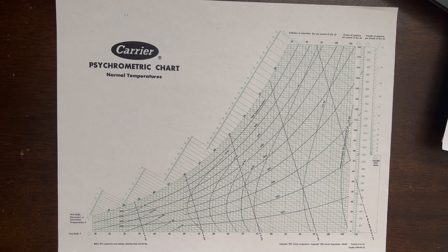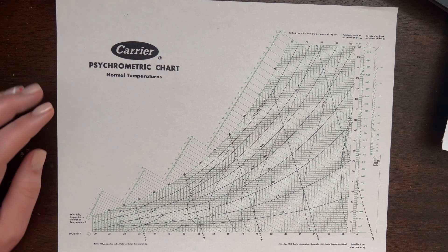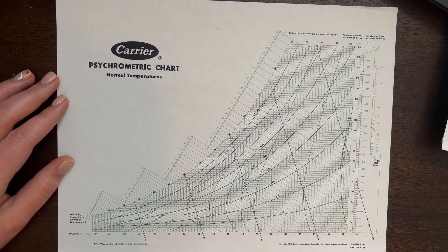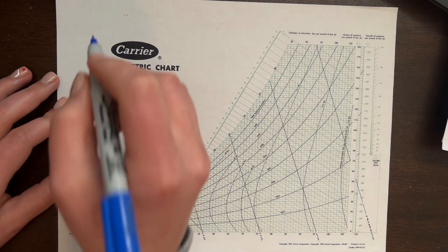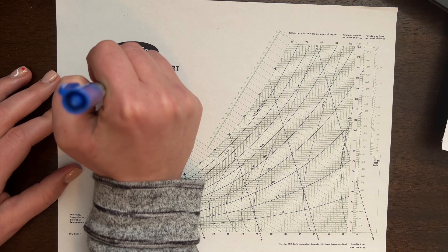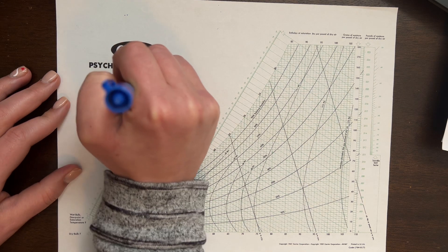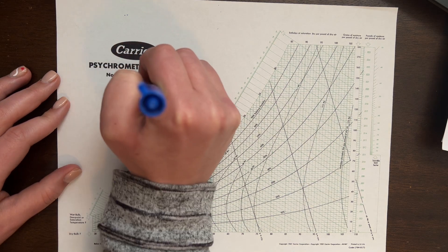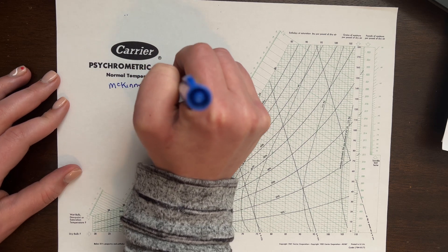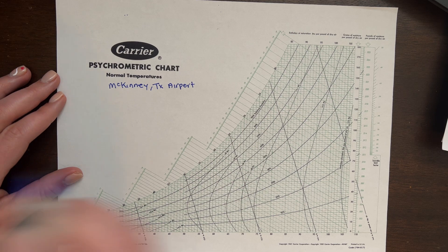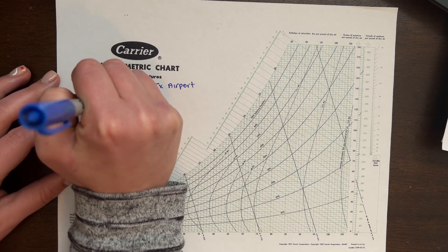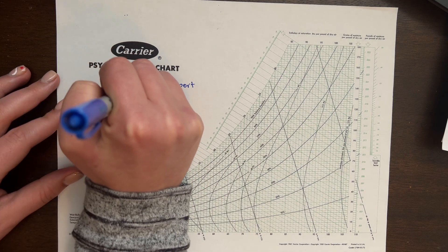So this is going to be an example of finding properties based on the humidification day at the McKinney Airport. It's at McKinney, Texas Airport is where I'm getting my ASHRAE information, my design day information. I'm looking at the humidification day.